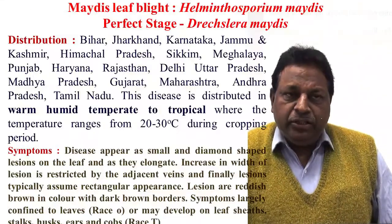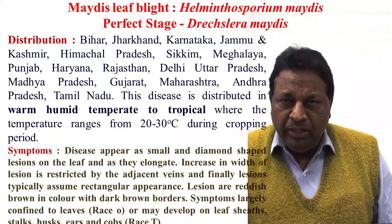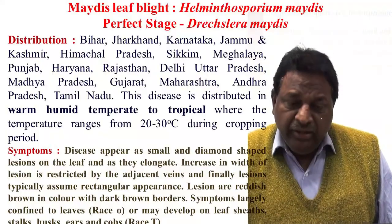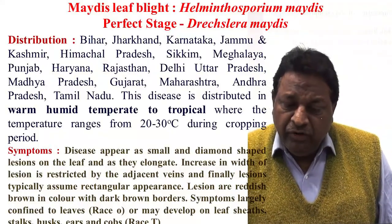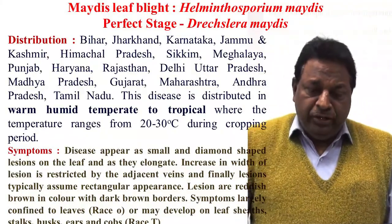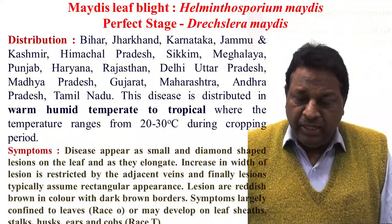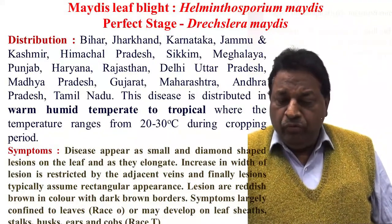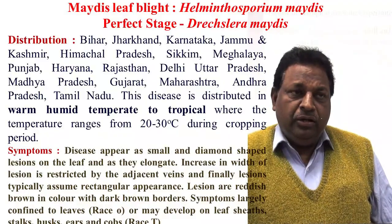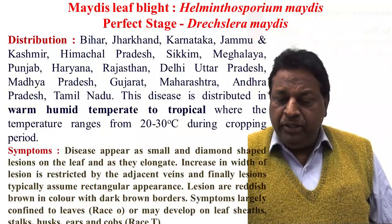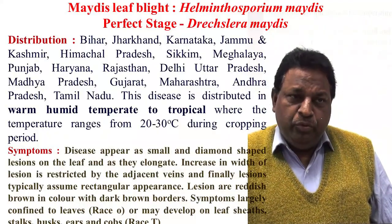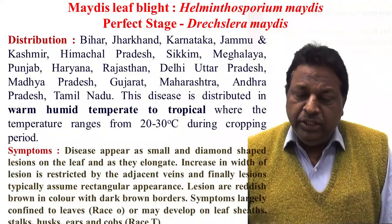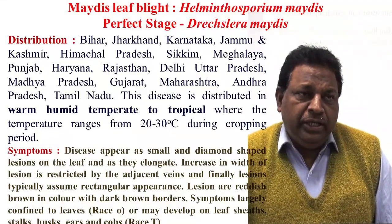Now coming to Maydis leaf blight. This is caused by Helminthosporium maydis, and the perfect stage is Drechslera maydis. This disease is already reported from different parts of the country, that is Bihar, Jharkhand, Jammu and Kashmir, Haryana, Punjab, Himachal Pradesh, etc. This disease generally occurs where humid, warm weather conditions prevail, with temperature ranging from 20 to 30 degrees Celsius. The disease also occurs when the crop is at the age of 25 to 30 days.